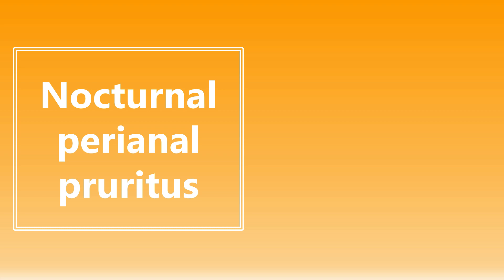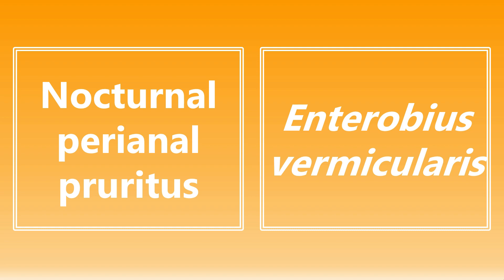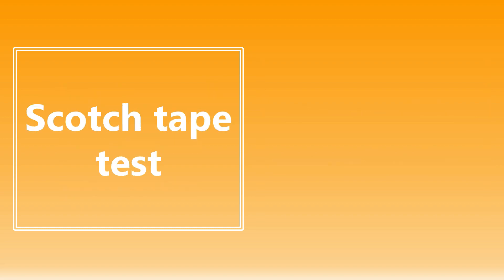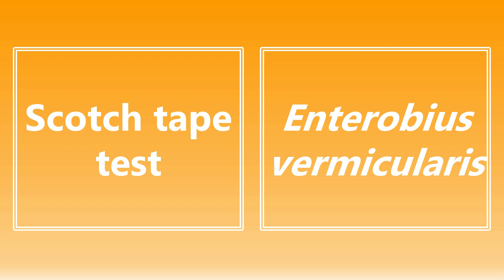Moving on: nocturnal perianal pruritus. This is going to be Enterobius vermicularis. In conjunction with that, the scotch tape test is also going to be Enterobius vermicularis. So if they have a pediatric patient with nocturnal perianal pruritus, or they ask about the diagnosis, remember you place scotch tape in that area and when you remove it you may see the eggs. The organism associated with that is Enterobius vermicularis.